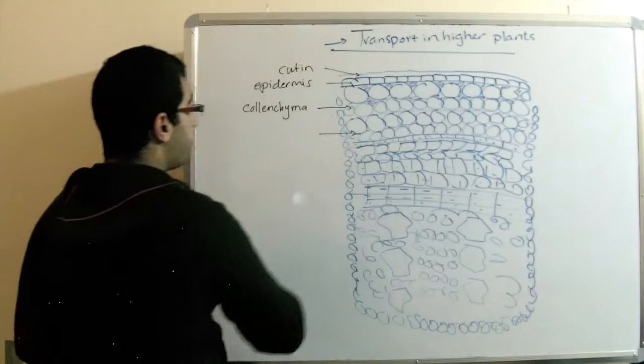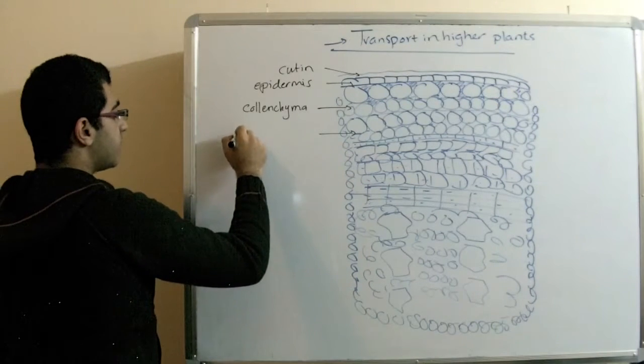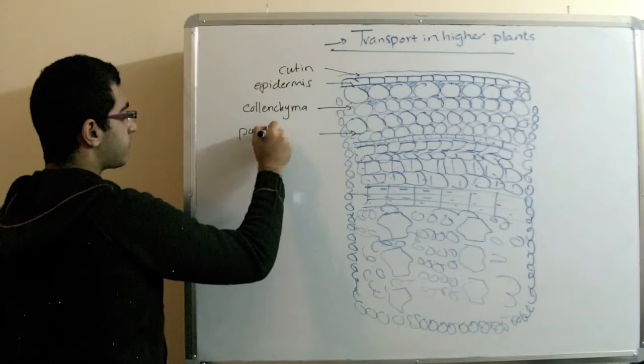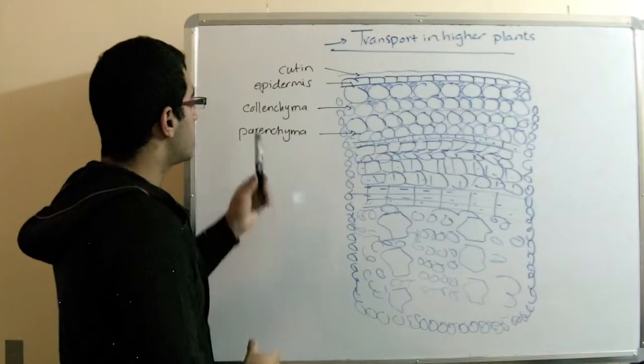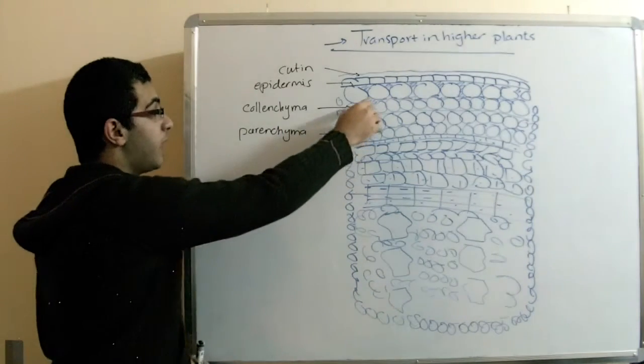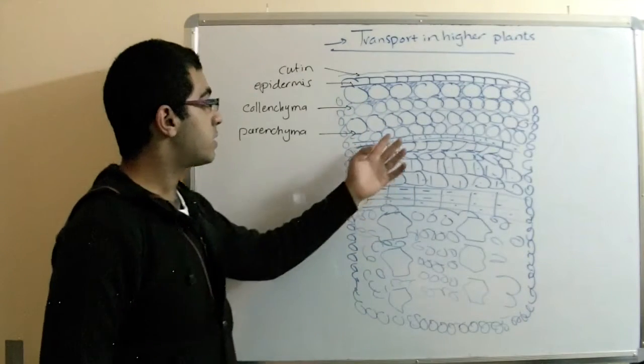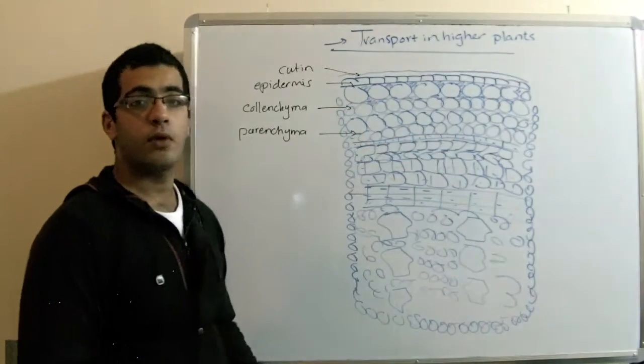The next layer is called the parenchyma. And these parenchyma cells are just like the collenchyma but without this deposition of cellulose. So, there are spaces here empty for aeration.